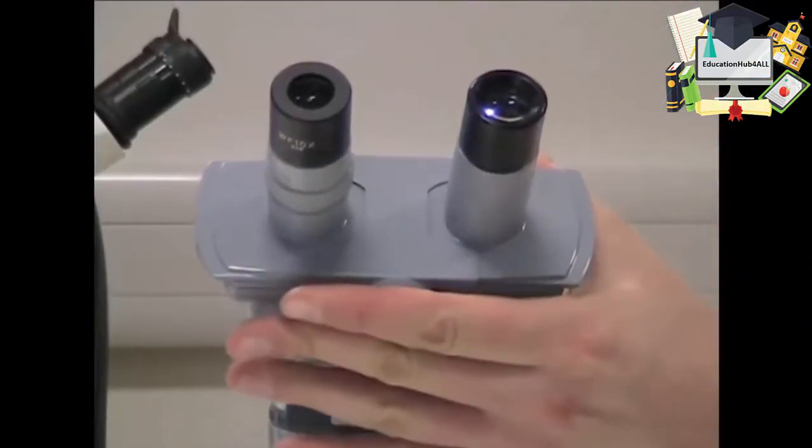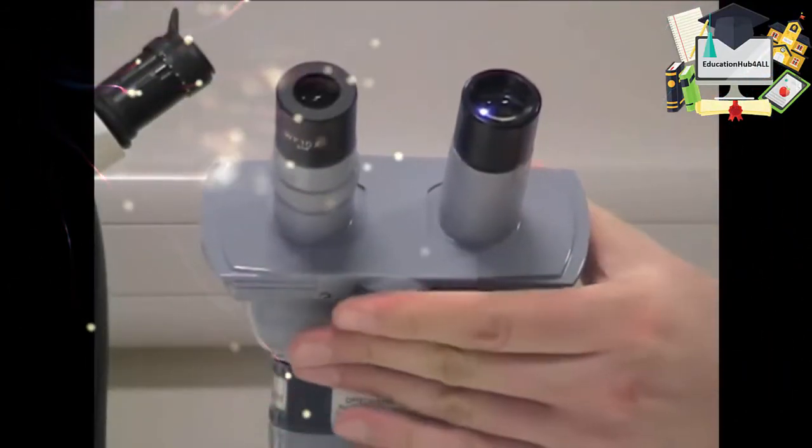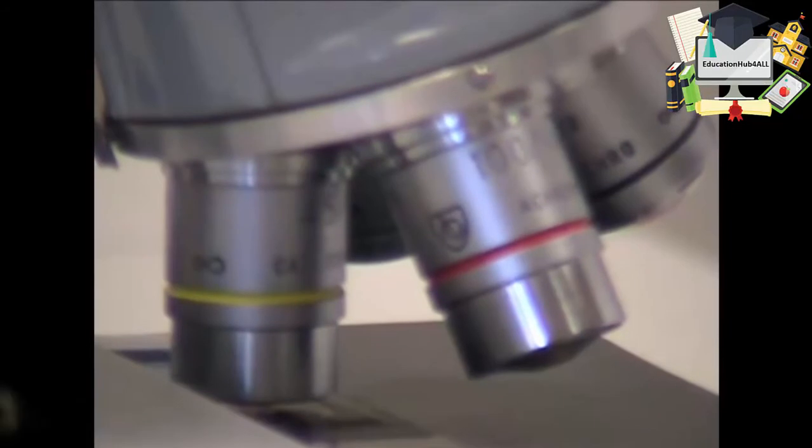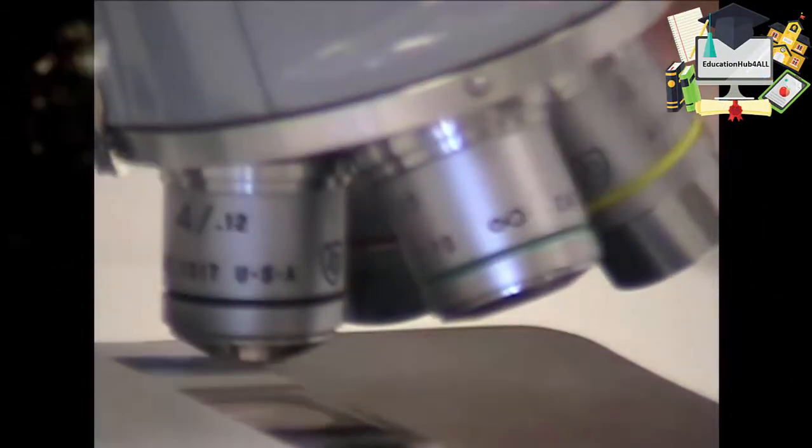Adjust the distance between the eyepieces so that when you look through them you see a single image. Now we're ready to focus the microscope. It's best to start off with a low power objective. At the moment this is on the x45, quite a high one. You can read this number from the side of the lens. We're now using the x4 objective lens.